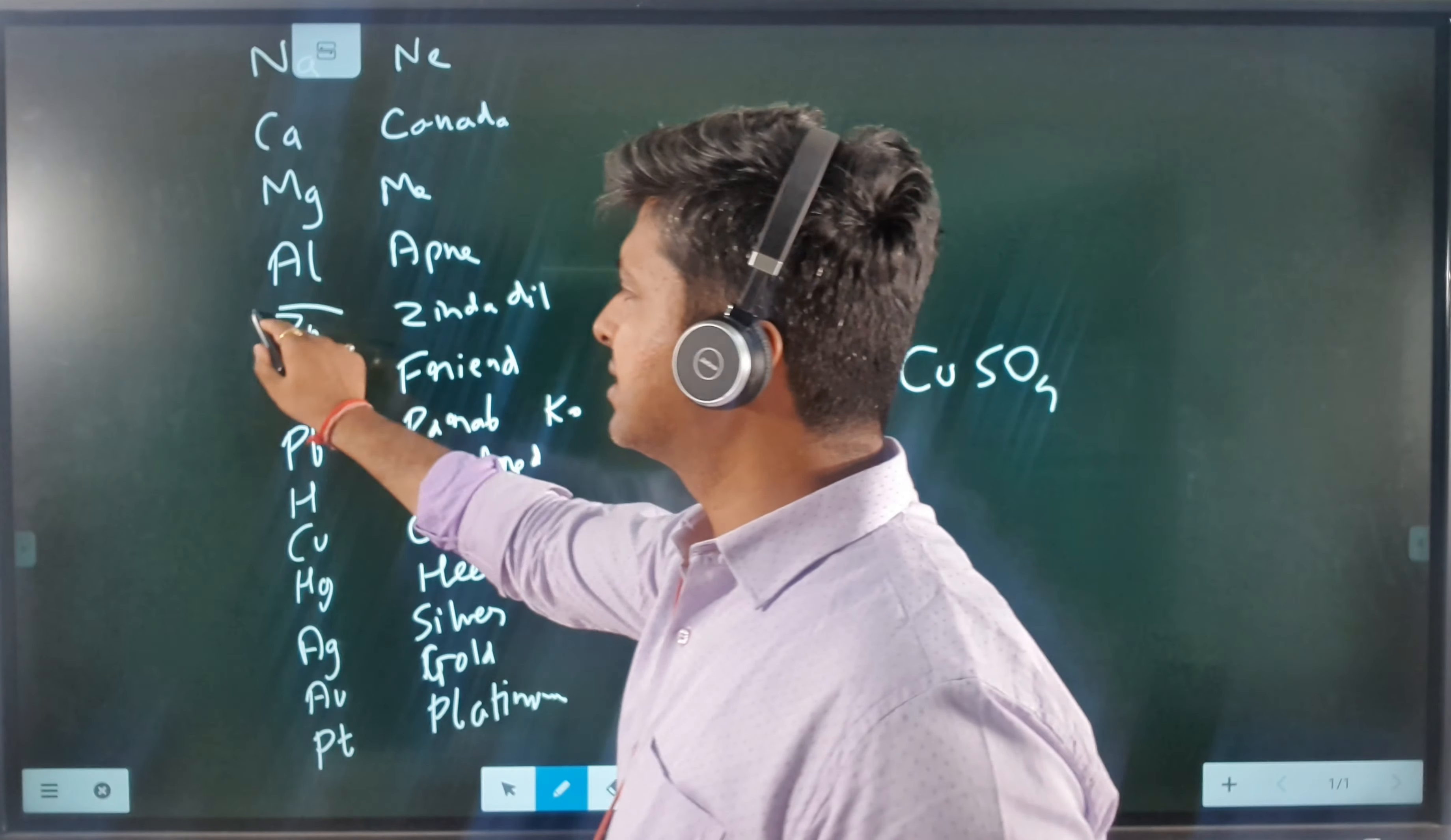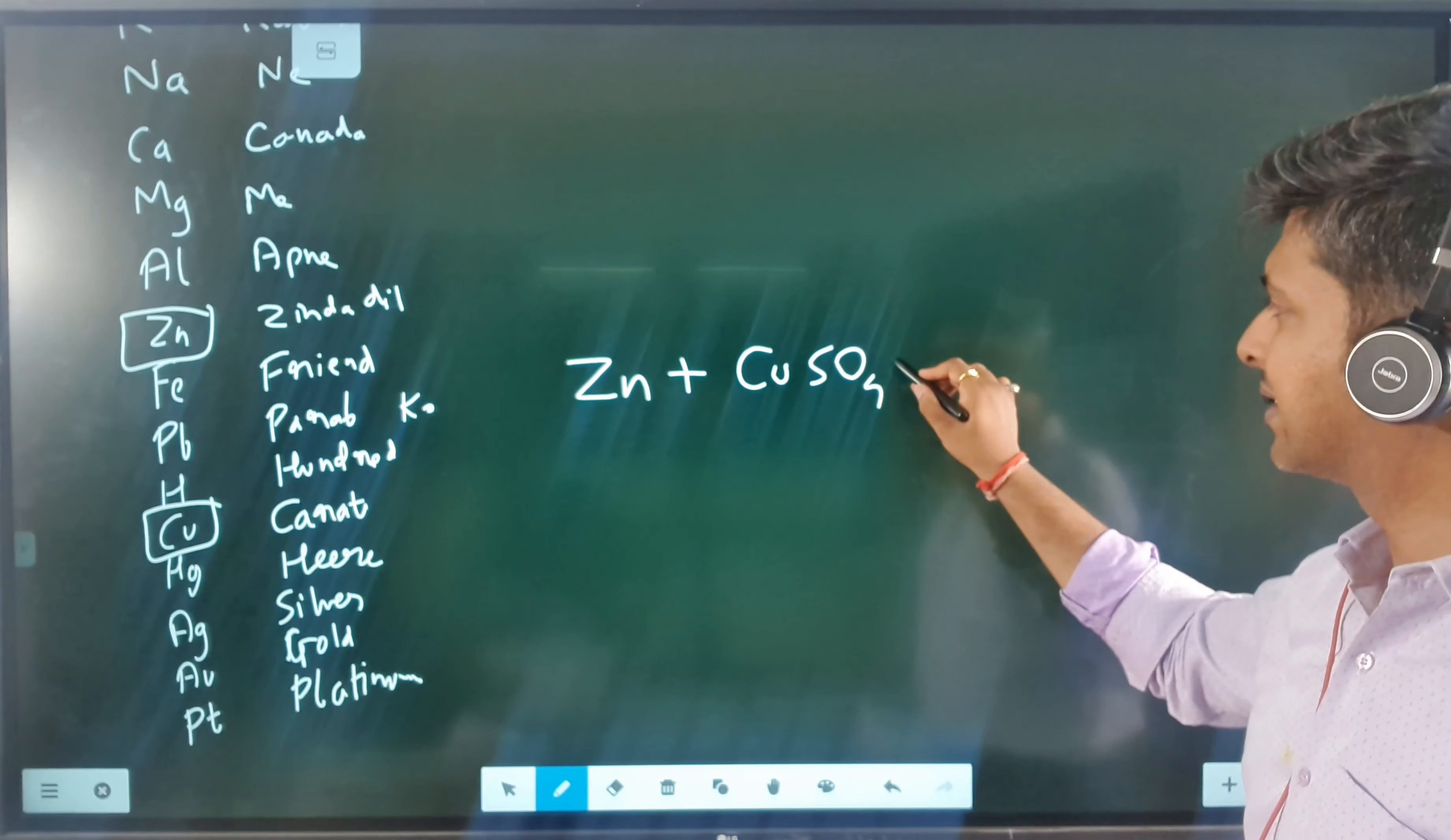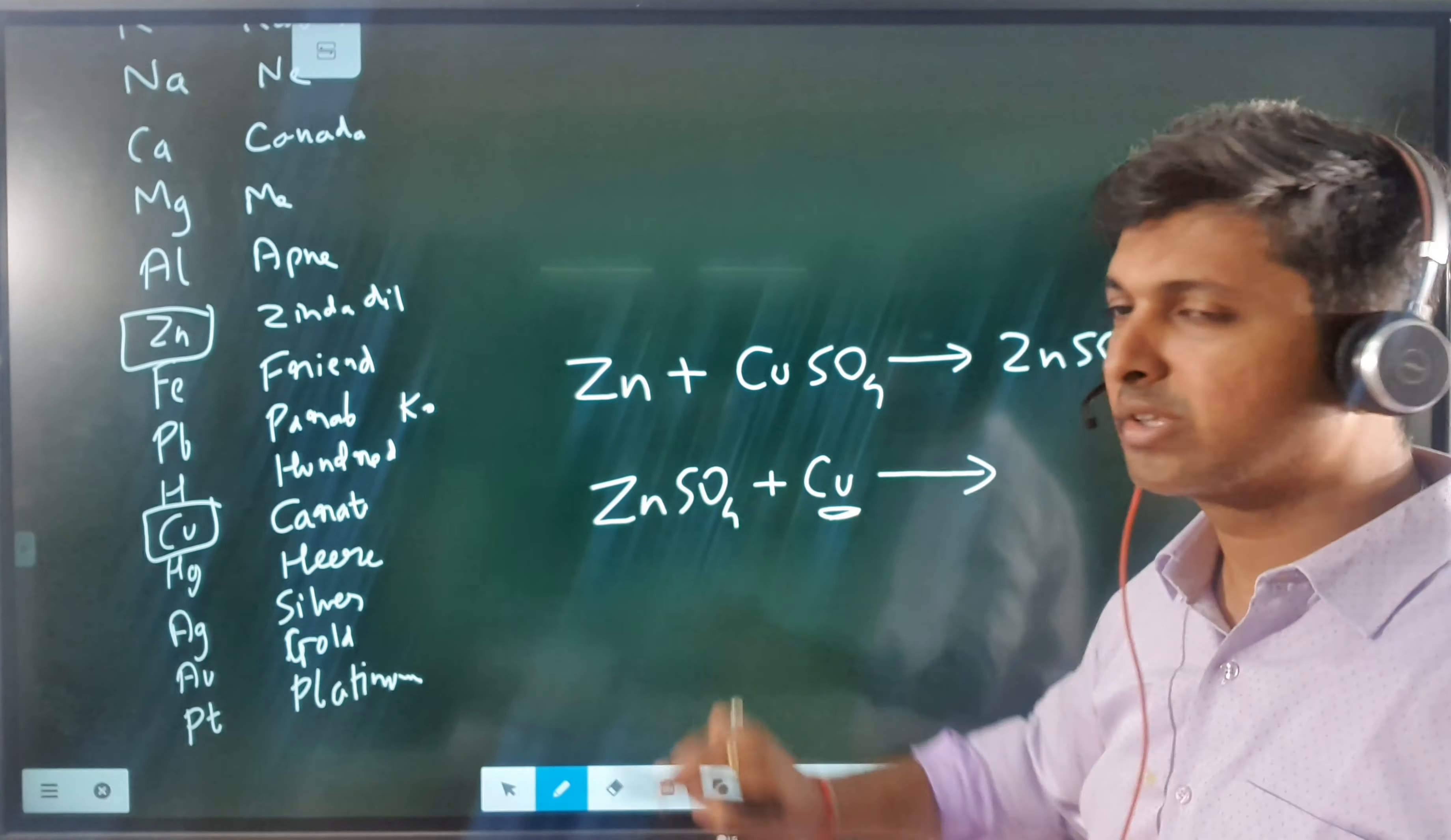You can see that zinc is placed above copper. Zinc is more active—what is placed on top is more active. So zinc is more active than copper, meaning zinc can displace copper. You can quickly get zinc sulfate plus copper. But if I take zinc sulfate plus copper instead, then copper is not able to displace zinc.